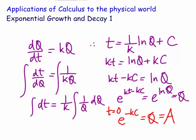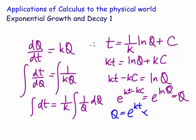So we then rewrite this expression. We now have that Q is equal to e to the kt times e to the minus kc, and you might remember we let that be a. So Q is equal to a e to the kt. This is, if you like, the solution to the differential equation.